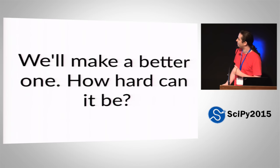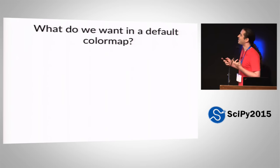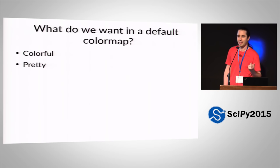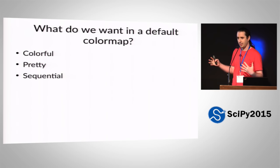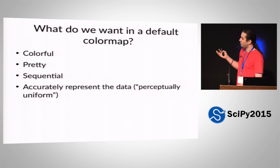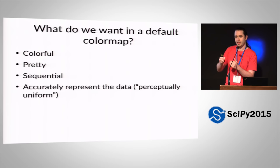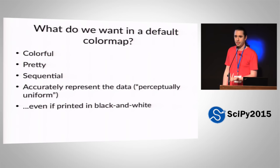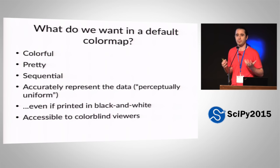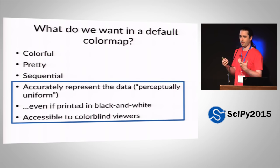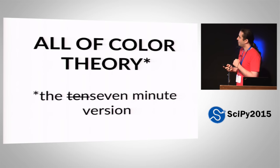So, what do we want from our new color map? Well, we know it should be colorful — it's right in the name. And probably pretty, because if people don't like it, they won't use it. We don't know anything about the data in a default case except that it's numbers, so it should be sequential, not diverging or circular. And the key problem with Jet is we want our new color map to actually accurately represent the data. It would also be nice if it works in black and white, since people still print things. And we want it to be accessible to as many people as possible.